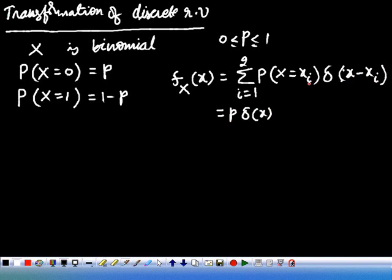This can be written as P delta of x. Here x1 is 0, and x2 is 1. So P times delta of x plus 1 minus P times delta of x minus 1. This is the density function of the discrete random variable which is binomial.